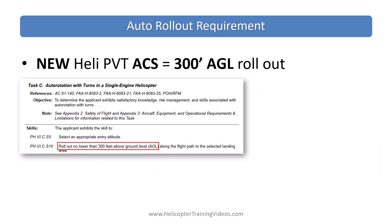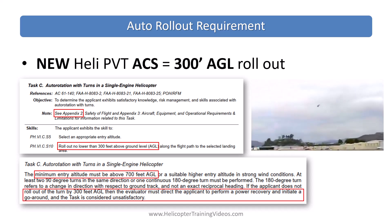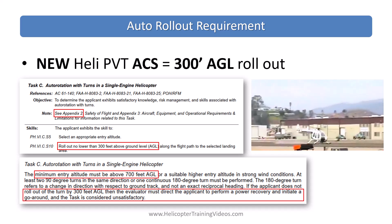For the auto rotations with turns or the 180 autos, there are a few changes. The first is that the rollout or the turn has to be complete no lower than 300 feet above the ground. Appendix 2, which is safety of flight, also stipulates that the entry must be at least 700 feet, and it makes clear that if the applicant has not finished the turn by 300 feet, the evaluator will instruct the applicant to perform a power recovery and go around, and the task will be considered unsatisfactory. For many of us that may require a higher entry altitude than we've been used to. This is actually a positive thing because having a higher entry altitude gives you more time to make adjustments to ensure that you hit your spot, and you can see a good example of why that rollout requirement is a good safety of flight requirement to reduce accidents.